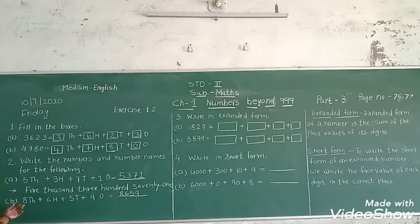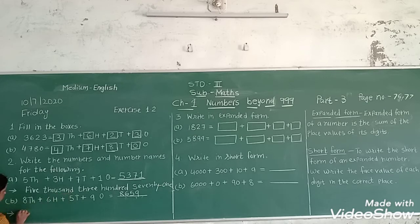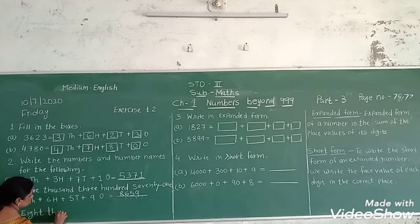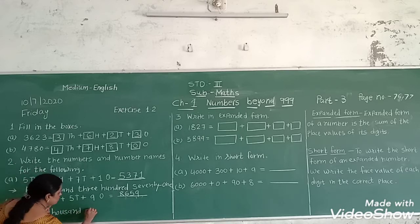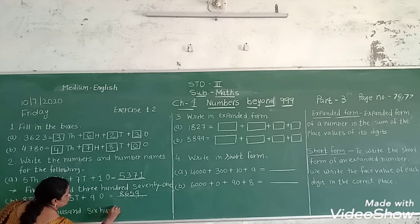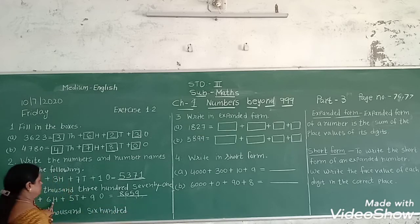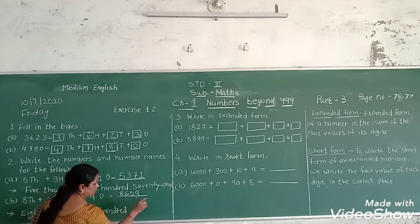Now we write the number names: eight thousand, six hundred, fifty-nine.